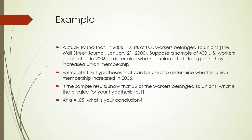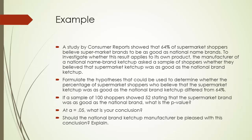Here are two examples of hypothesis testing for a population proportion. In the first example, it is an upper-tailed test. The second example is slightly trickier — it is a two-tailed test. But suppose this national brand ketchup manufacturer would like to see whether the percentage of supermarket shoppers who believe the supermarket ketchup was as good as the national brand ketchup is less than 64%. The lower the percentage, the better for the national brand ketchup manufacturer.